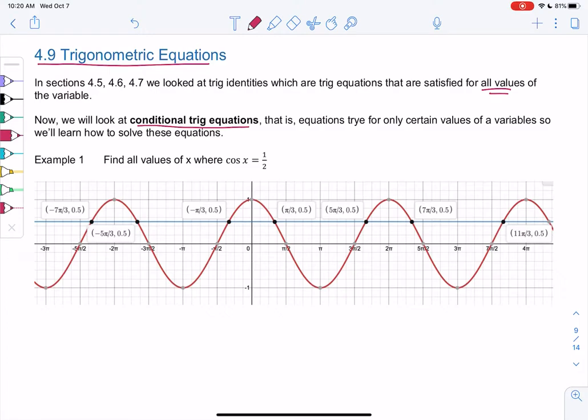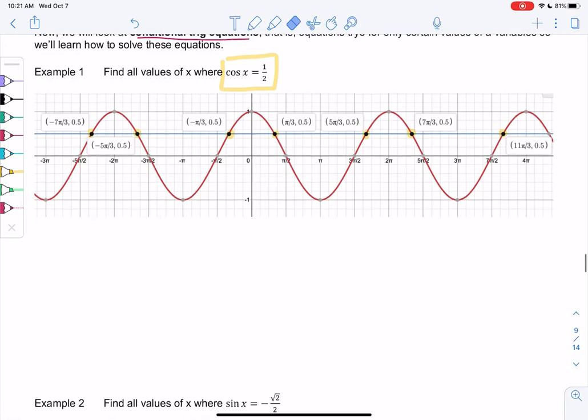If you're visual, I drew a picture for the first one. We want to find all values where cosine x equals one-half. Visually it should make sense that it happens a lot, right, because the cosine function goes up and down forever, so it's gonna equal one-half lots and lots of times.